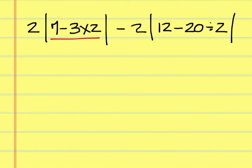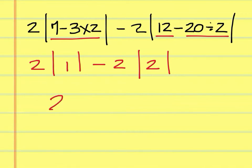Inside here you're going to have 7 minus 6 which is 1, and on this other side 12 minus 10 is 2. Absolute value of 1 is 1 times 2 is 2. Absolute value of 2 is 2 times 2 is 4. 2 minus 4 is negative 2.